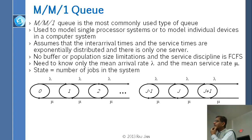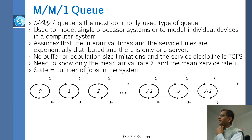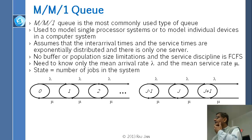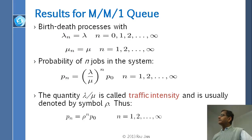Let us apply this to MM1Q. MM1Q is very simple. The arrival rate is always lambda — regardless of how many people are in the queue, the rate does not change. It is basically memoryless, so all lambdas are equal. Similarly, all service rates mu are equal. This is a much simpler case than what we just derived. Regardless of what state the system is in, the service rate and arrival rate do not change.